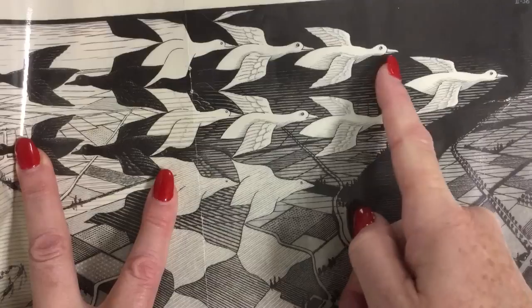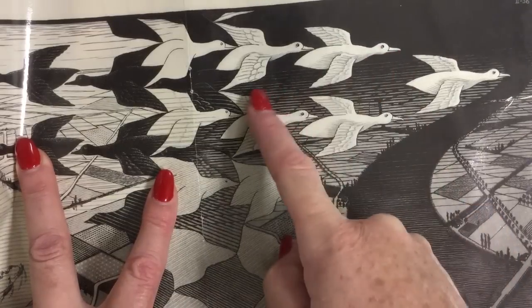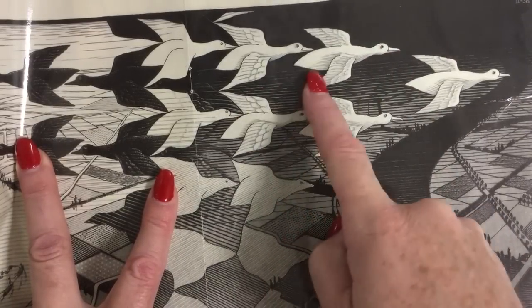It's interlocking and it's actually just flipped to the other side here. So it's this, here you see the head, the beak, and that's the same shape as this, head, beak, wings.